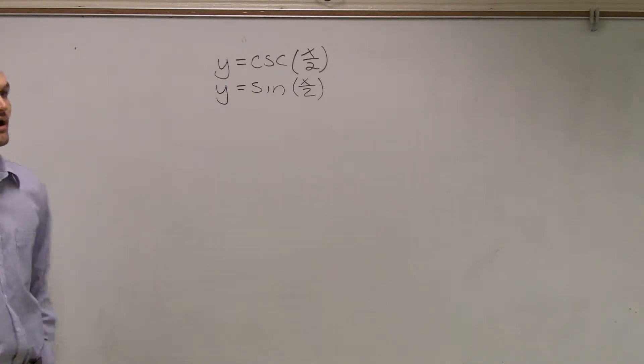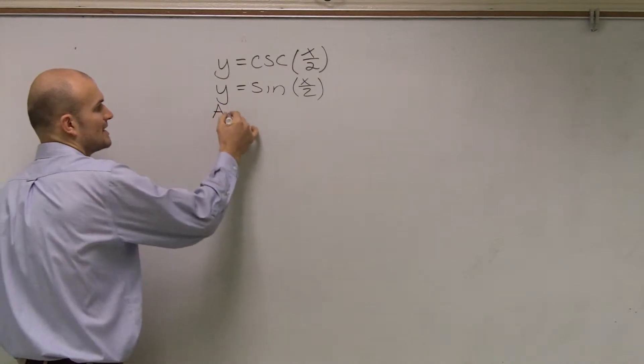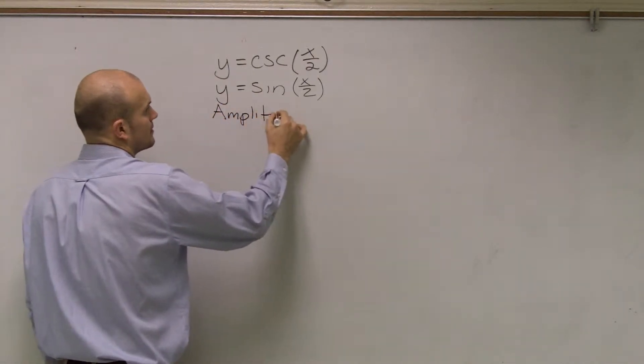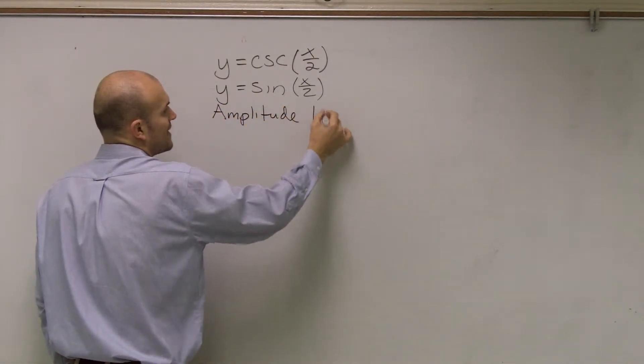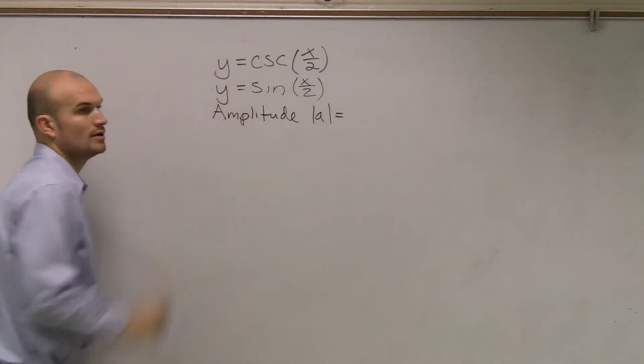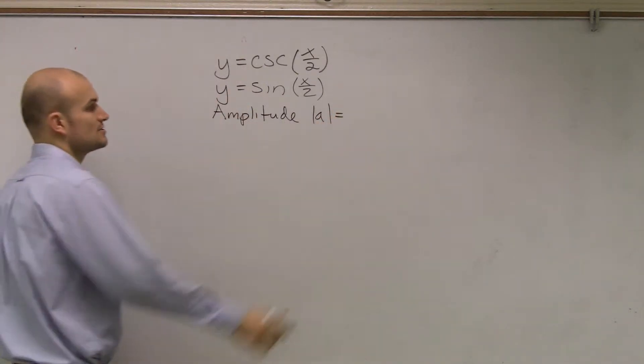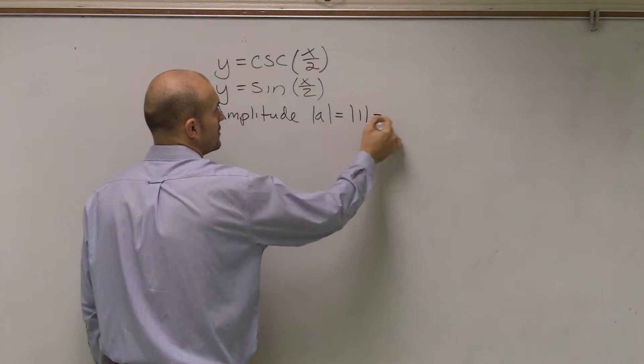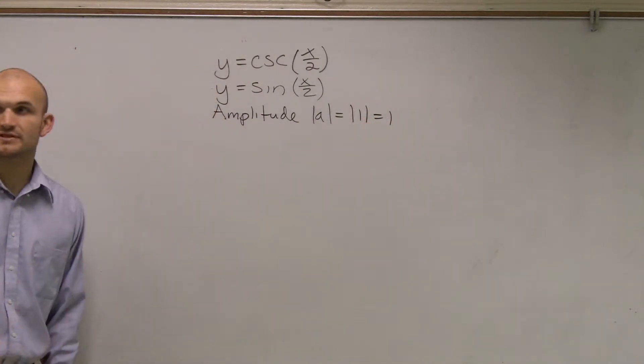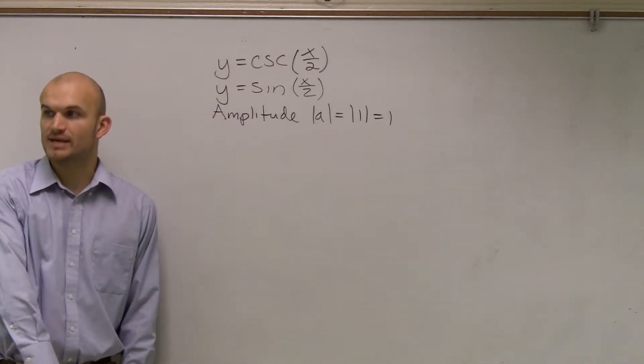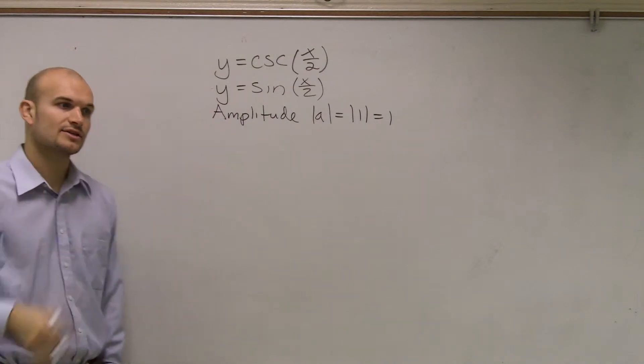So when we're graphing sine and cosine graphs, remember there's a couple things we did. First thing, we always figured out what the amplitude was. Amplitude was the absolute value of a, which here, we have a 1 in front of the sine, so it's going to be the absolute value of 1, which is 1. That means my graph is going to go up 1 and down 1 from the x-axis. That's the height that the graph is going to travel.